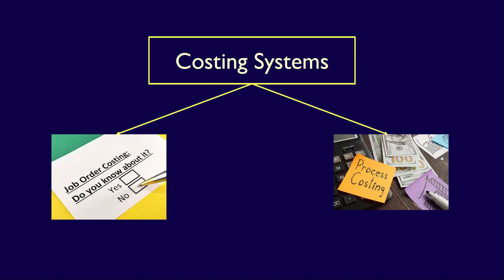There are two types of costing systems: job order costing and process costing. What exactly is the difference between these two types of systems?